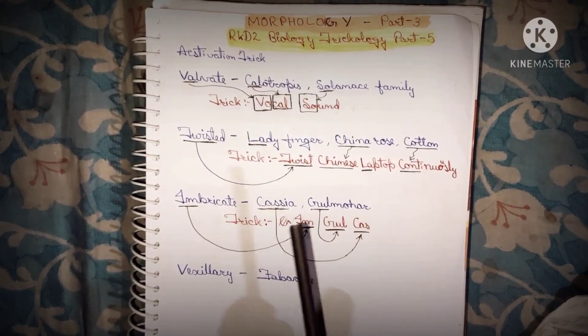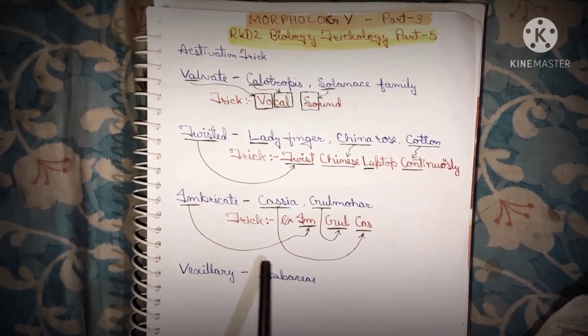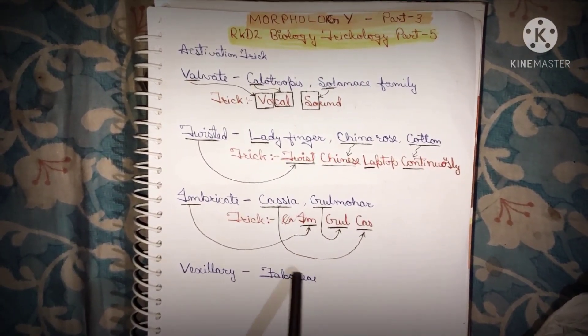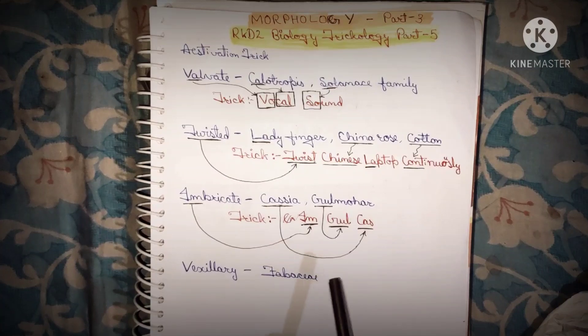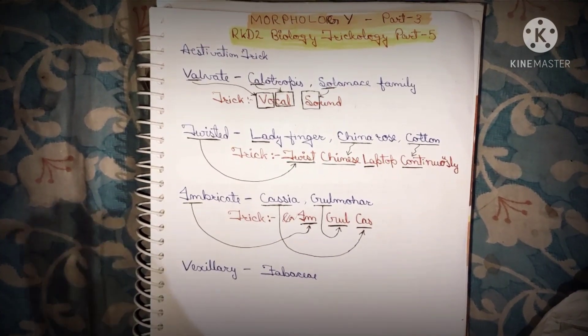Vexillary estivation has no trick — simply one word to remember: Fabaceae.